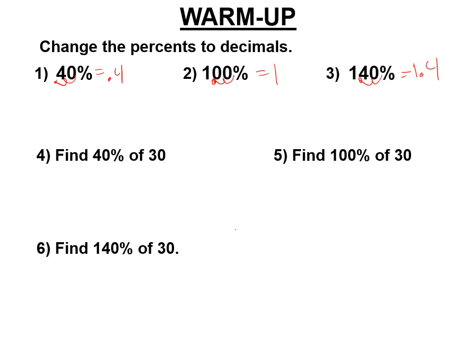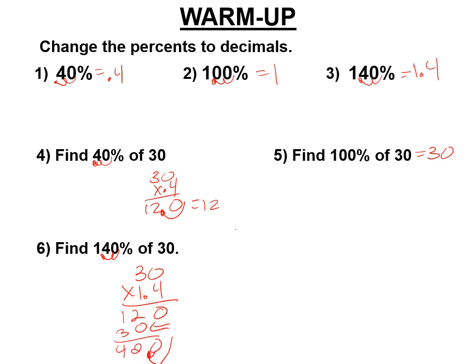Find 40% of 30. And so to find 40% of 30, you would do 30 times 0.4, and you get 12. 100% of 30, you get 30. So 140% of 30, let's see that. 30 times 1.4. 4 times 0, 4 times 3 is 12. Step over, 1 times 0, 1 times 3. And you get 42.